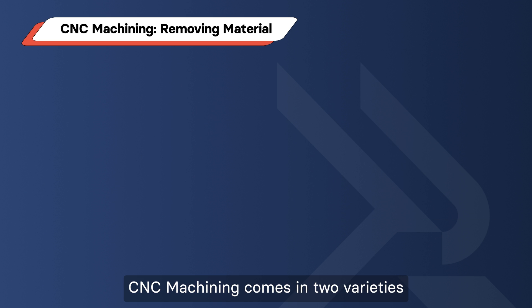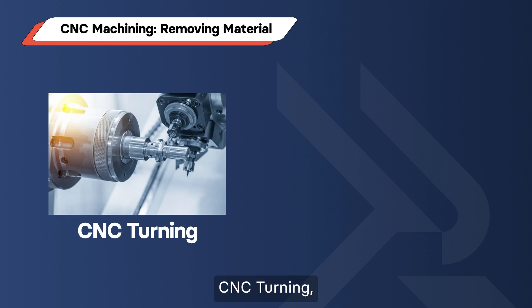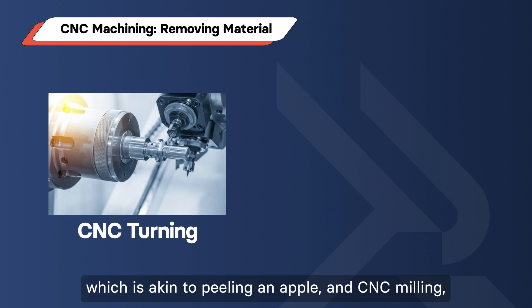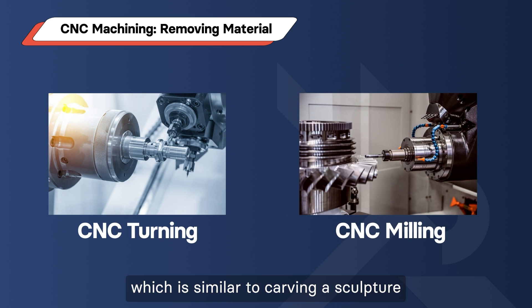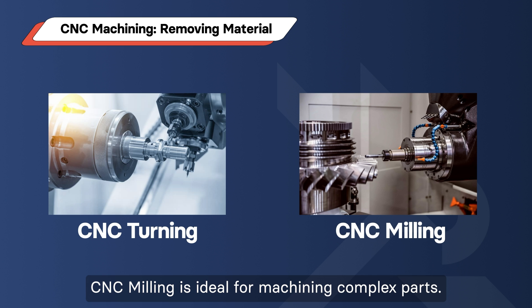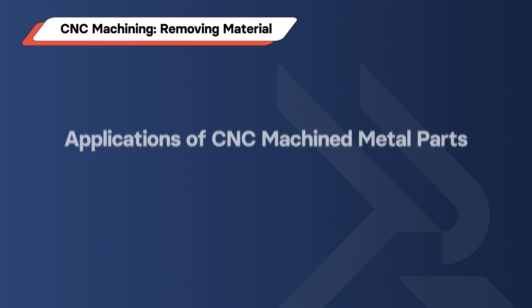CNC machining comes in two varieties – CNC turning, which is akin to peeling an apple, and CNC milling, which is similar to carving a sculpture. With multi-axis capabilities, CNC milling is ideal for machining complex parts.